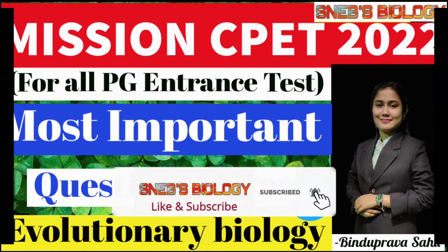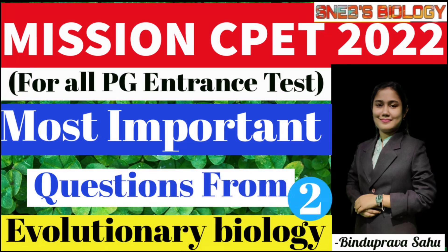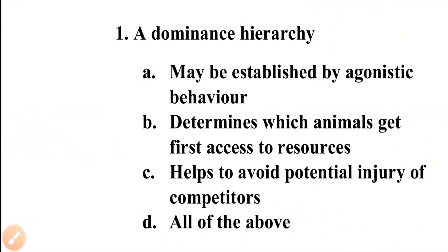Question number one: A dominance hierarchy may be established by agonistic behavior, determines which animals get first access to resources, helps to avoid potential injury of competitors, or all of the above. So what is dominance hierarchy? It is a type of social hierarchy that arises when members of animal or social groups interact, creating a ranking system.